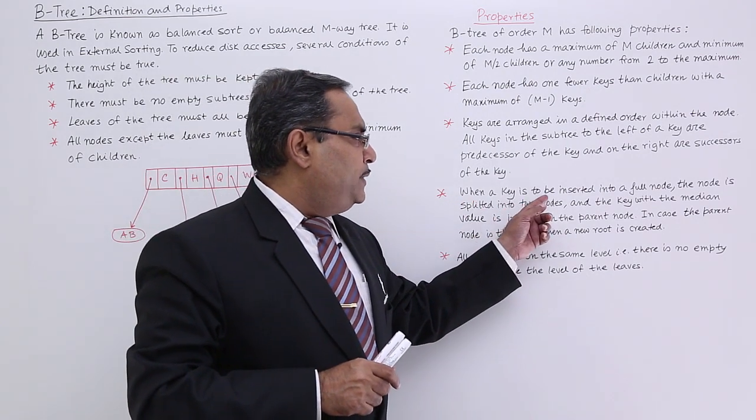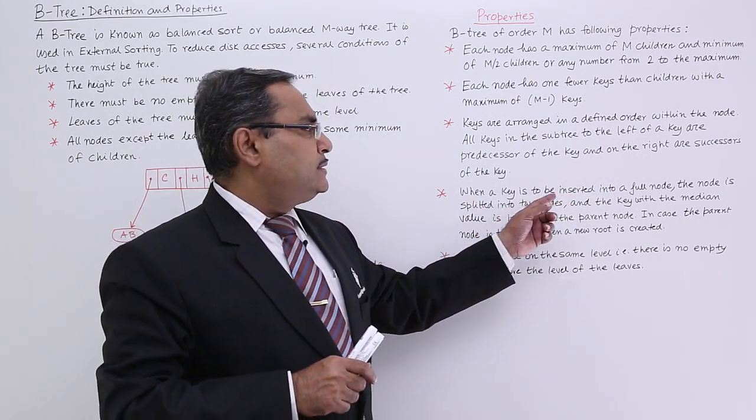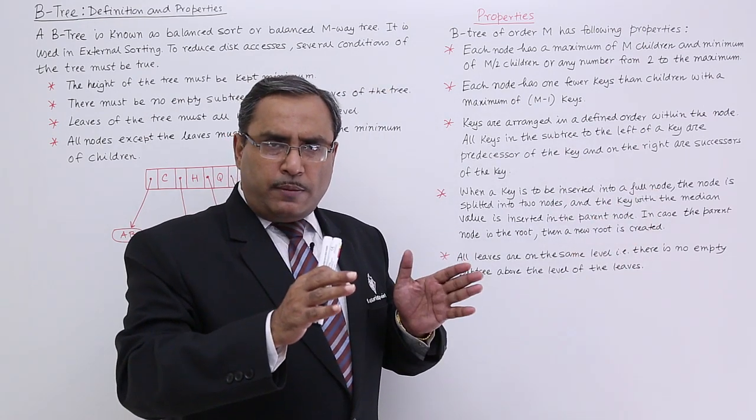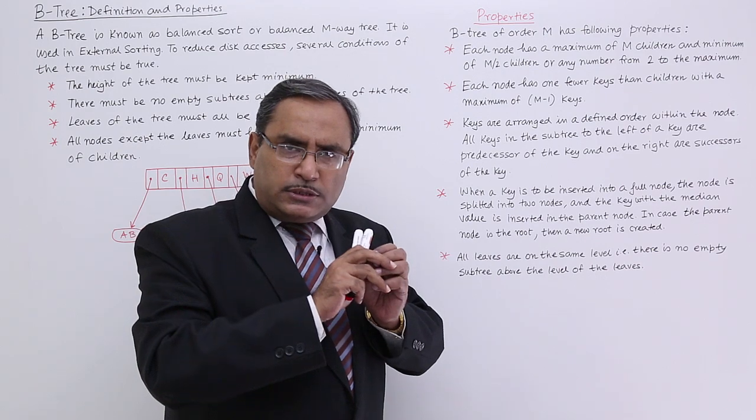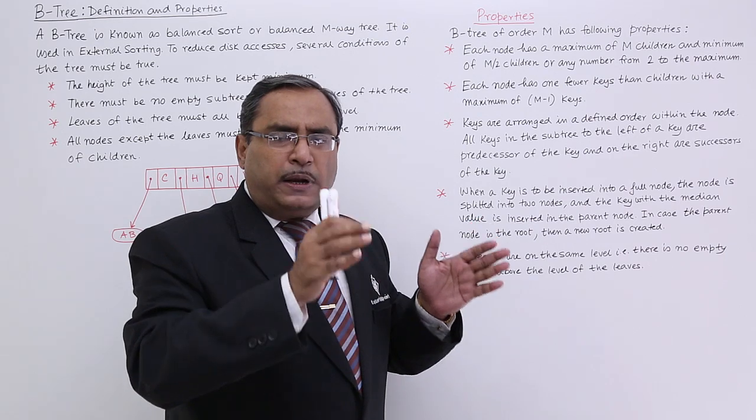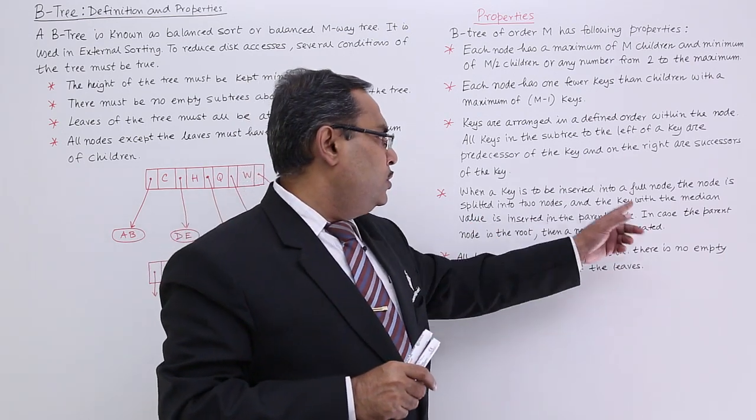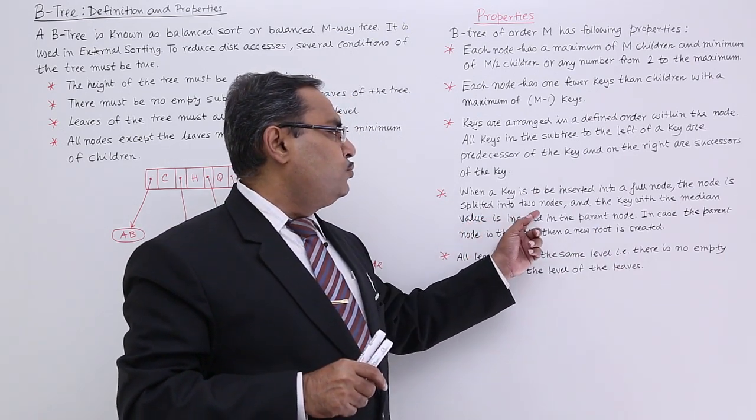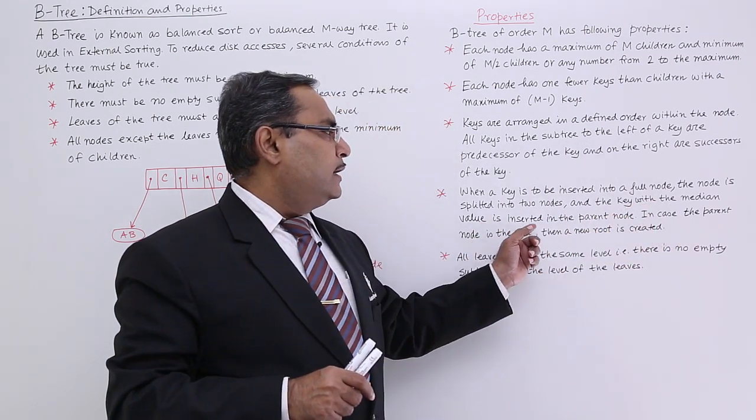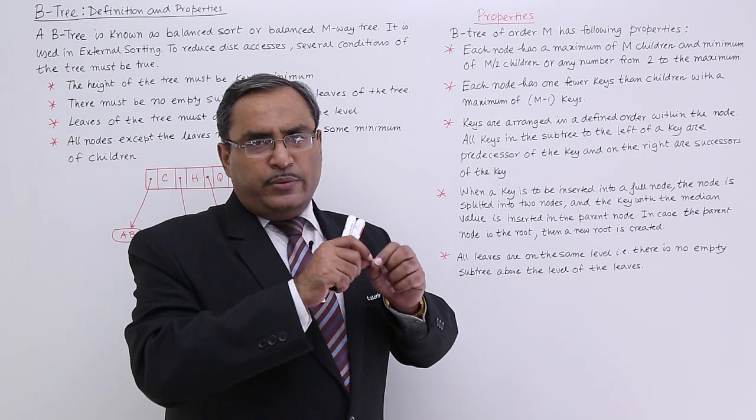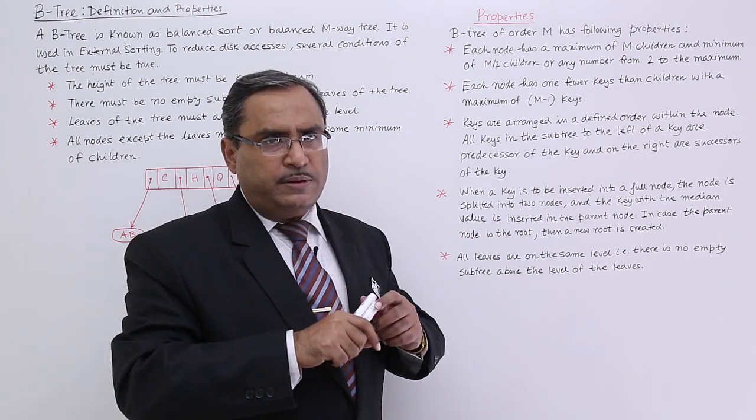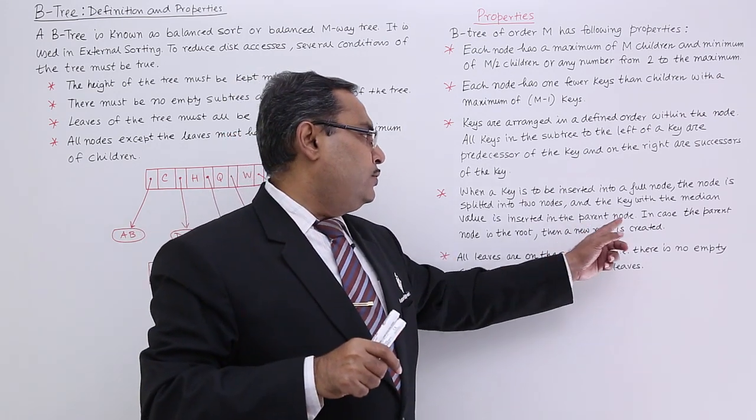When a key is to be inserted into a full node, that means the node should have M minus 1 number of keys. Let us suppose the node is completely filled up, but I am going to insert another key within that particular prefilled node. The node is split into 2 nodes and the key with the median value is inserted in the parent node. And the key with the median value, that means after sorting the middlemost data will be known as the median. So that will be inserted in the parent node.